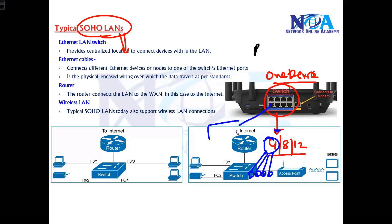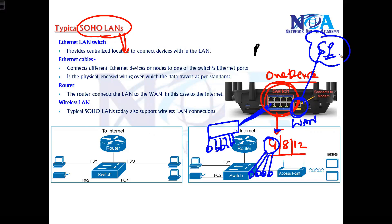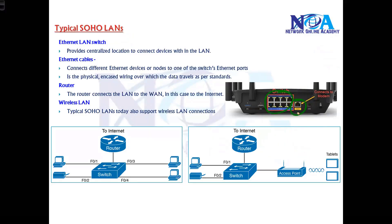If you want to extend beyond four or eight ports, you can connect this device to another switch to extend the LAN. It also has one WAN port, and this WAN port typically connects to the service provider or the internet. Depending on the type of internet connection — DSL uses an RJ11 connector, while cable modem internet uses an RJ45 connector. This WAN port acts like a router, so you don't need a separate router — it connects you to the internet or service provider.